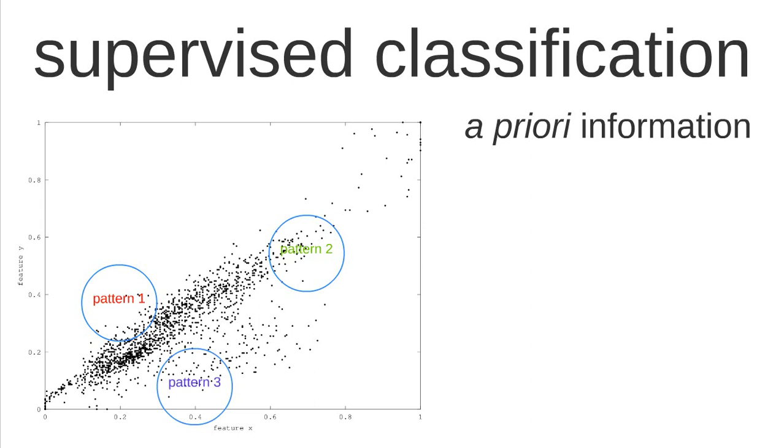That's a procedure that the user does before starting the algorithm, so we call this the training step. When we do this, we create this graph here which is all the instances that we have that remain unclassified plus the instances that we selected as training sets. So the red points belong to pattern 1, the green to pattern 2, and the blue to pattern 3.